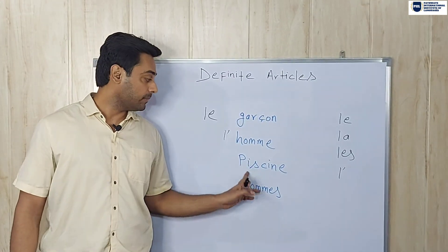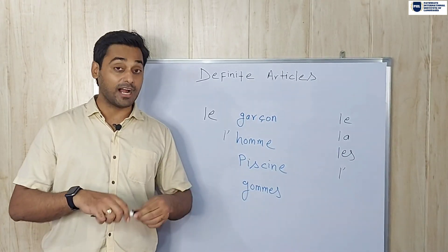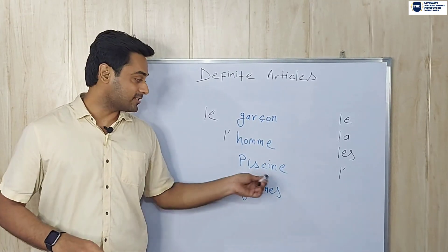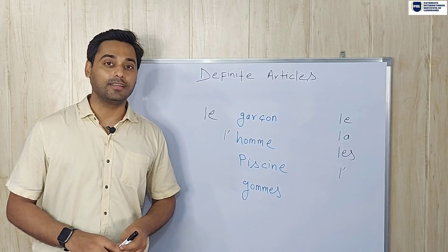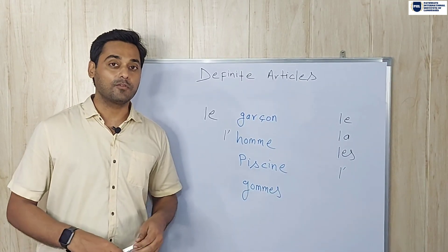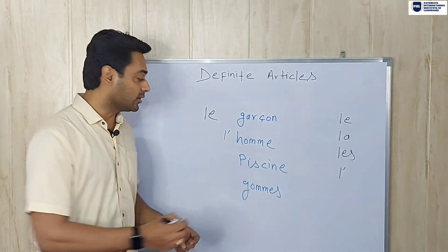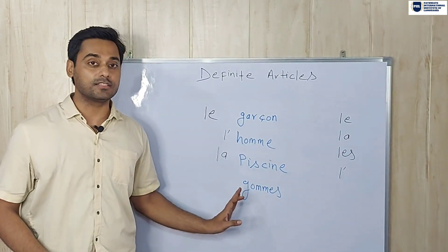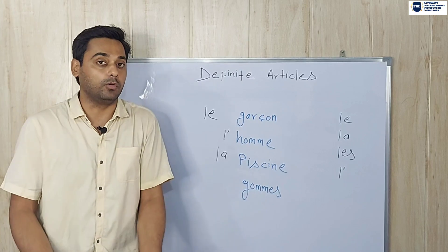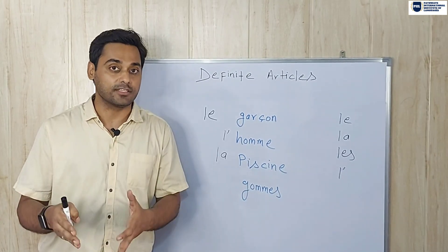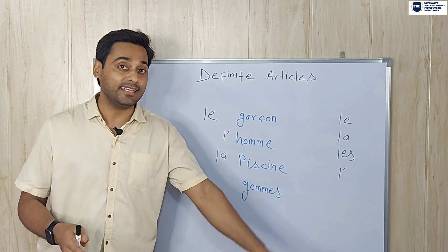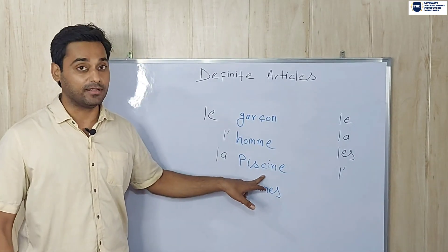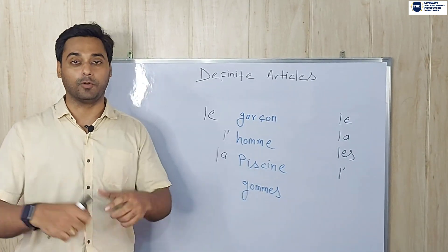Now look at the third noun: 'piscine'. Which article will we put in front of it? Look at the ending — it ends with 'e'. So I should put 'la'. It becomes 'la piscine' — the swimming pool. As already mentioned, in 80% of cases, if a noun ends with 'e', we consider it feminine. So this is feminine, and that's why we use 'la'.